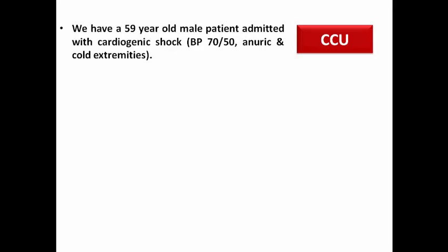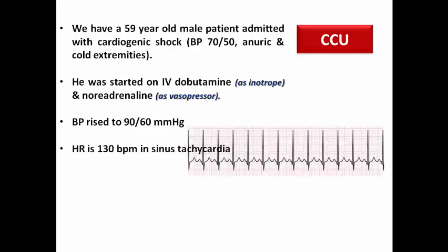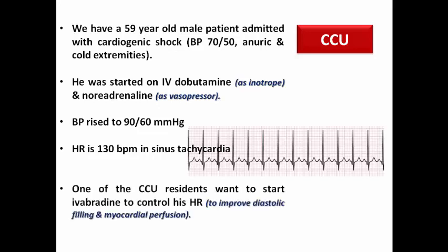We have a 59-year-old male patient admitted to the CCU with cardiogenic shock. His blood pressure was 70 over 50, anuric with cold extremities. He was started on IV dopamine as an inotrope and noradrenaline as a vasopressor. Blood pressure rose to 90 over 60 with warm extremities and he started to have urine output. The problem was that his heart rate was 130 beats per minute in sinus tachycardia.